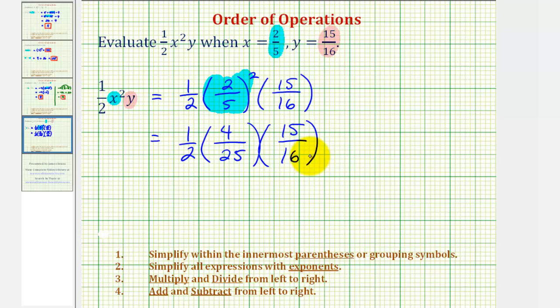Now we have a product of three fractions, but before we multiply, we want to simplify out any common factors between the numerators and denominators. So notice how we could simplify this two and four because they share a common factor of two, but notice the four and sixteen also share a common factor of four. Let's simplify using the four and sixteen.